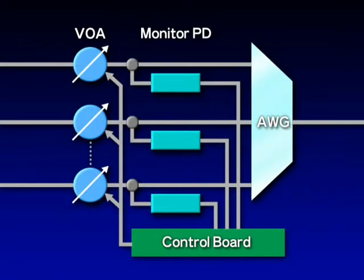The VAWG consists of four devices: AWG, VOA or Variable Optical Attenuator with TAP port, a monitor photodiode array, and a control board.